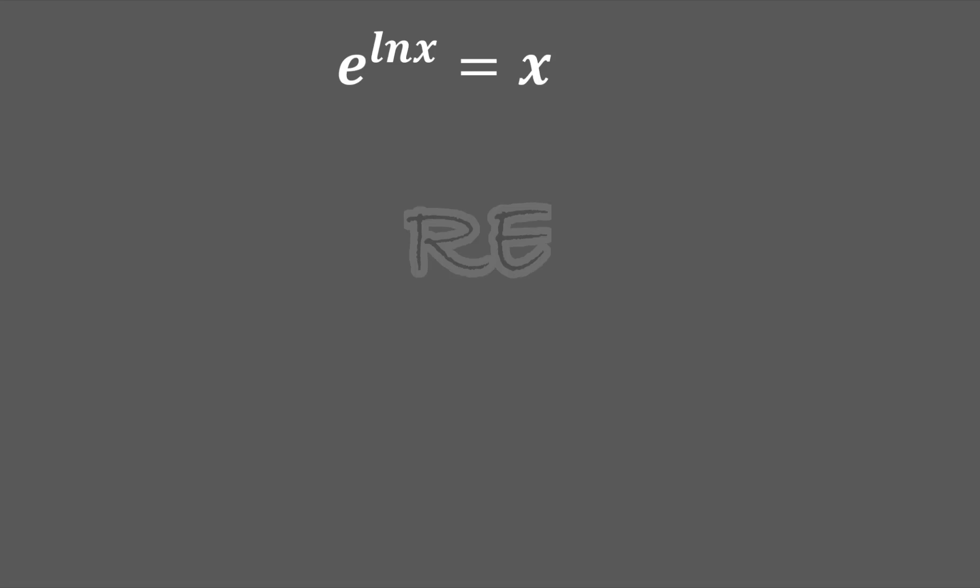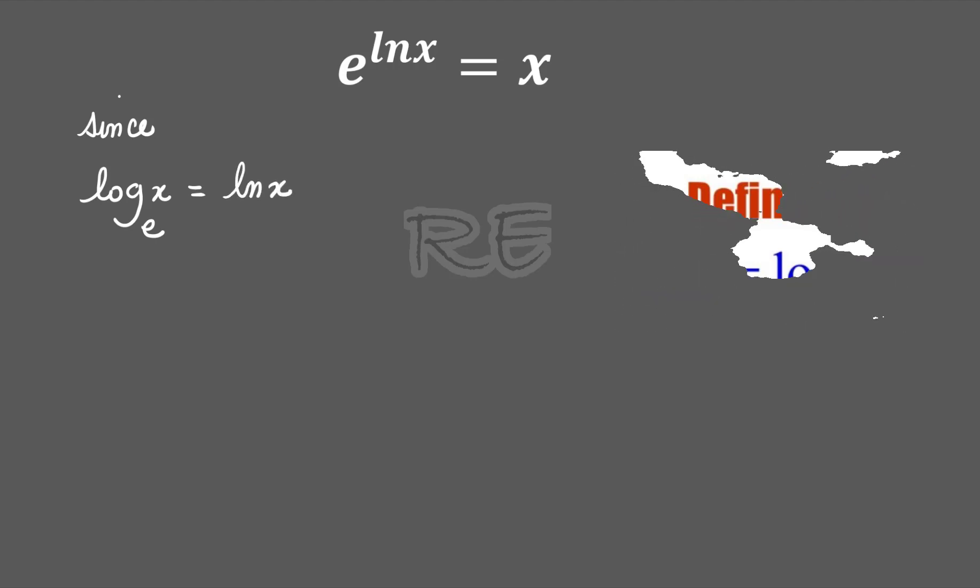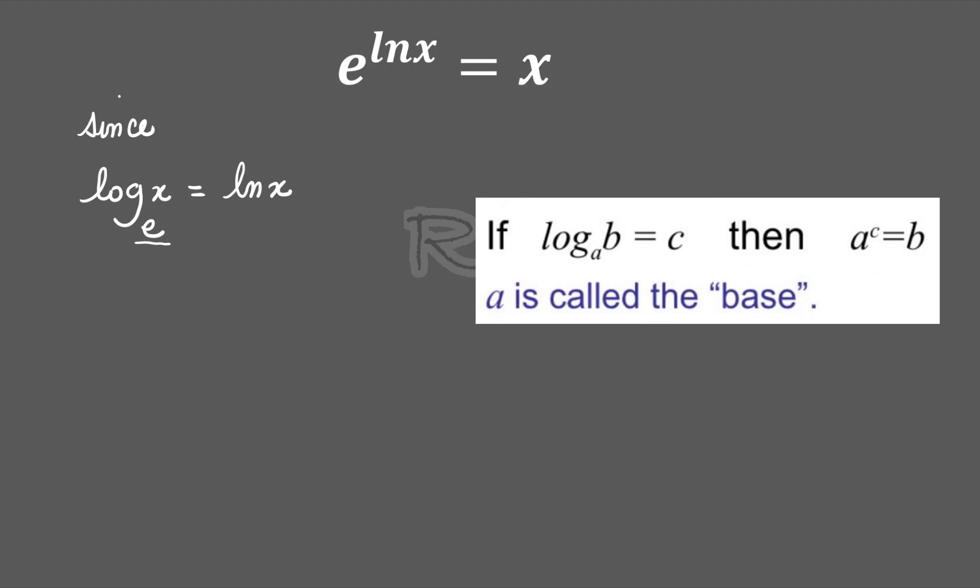e to the ln x is equal to x since log base e of x is equal to ln x. So this is the definition of ln x: the natural log of x is log base e of x.